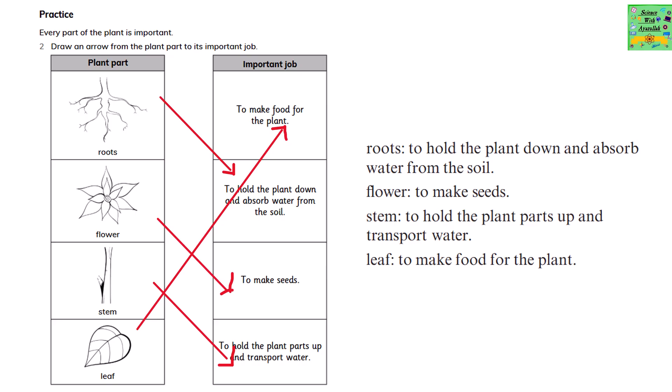Every part of the plant is important. Draw an arrow from the plant part to its important job. The roots hold the plant down and absorb water from the soil. Flower is to make the seeds. Stem to hold the plant parts up and transport water. Leaf is to make the food of the plant.